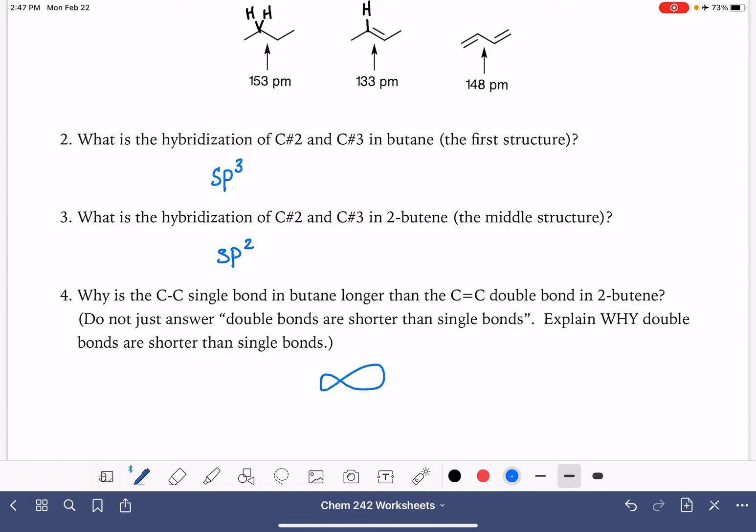This single bond is taking place between two sp3 hybrid orbitals, and our double bond is taking place between two sp2 hybrid orbitals. sp2 hybrid orbitals are shorter than sp3, and because the sp2 hybrid orbitals are shorter, the atoms have to come closer together. Because the sp2 orbitals are shorter, they have to come closer together to bond, which ultimately results in a shorter bond length.